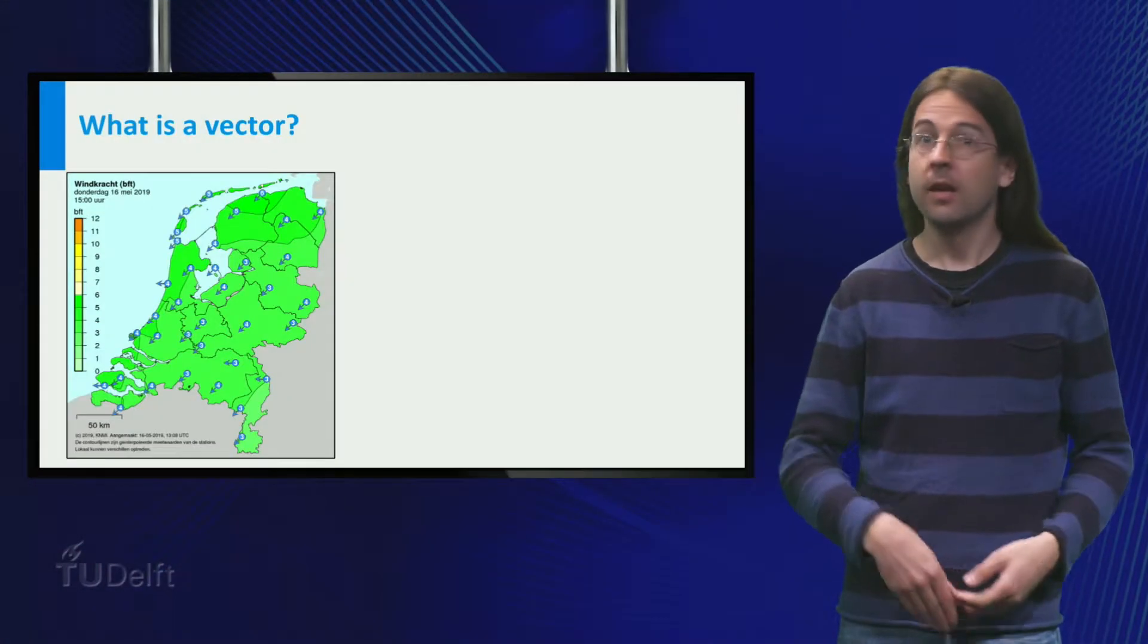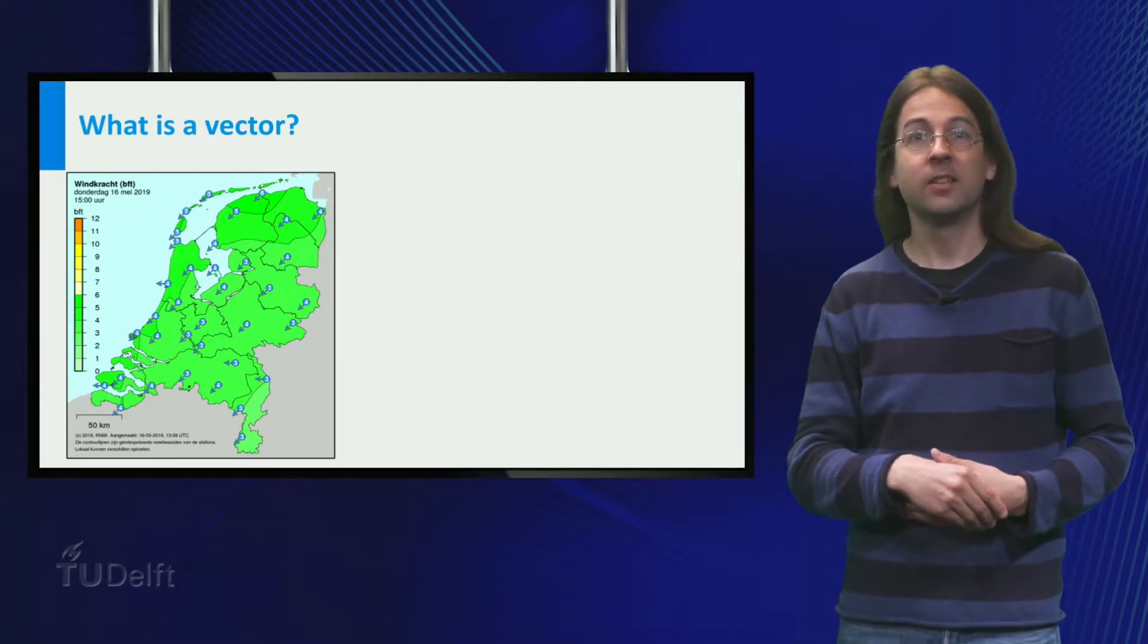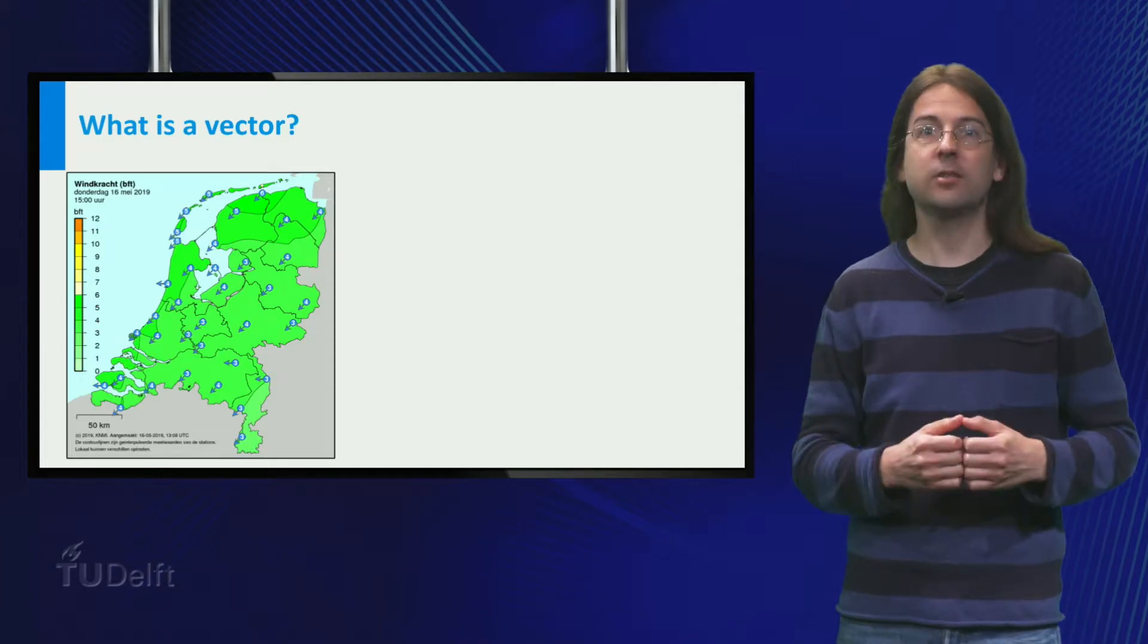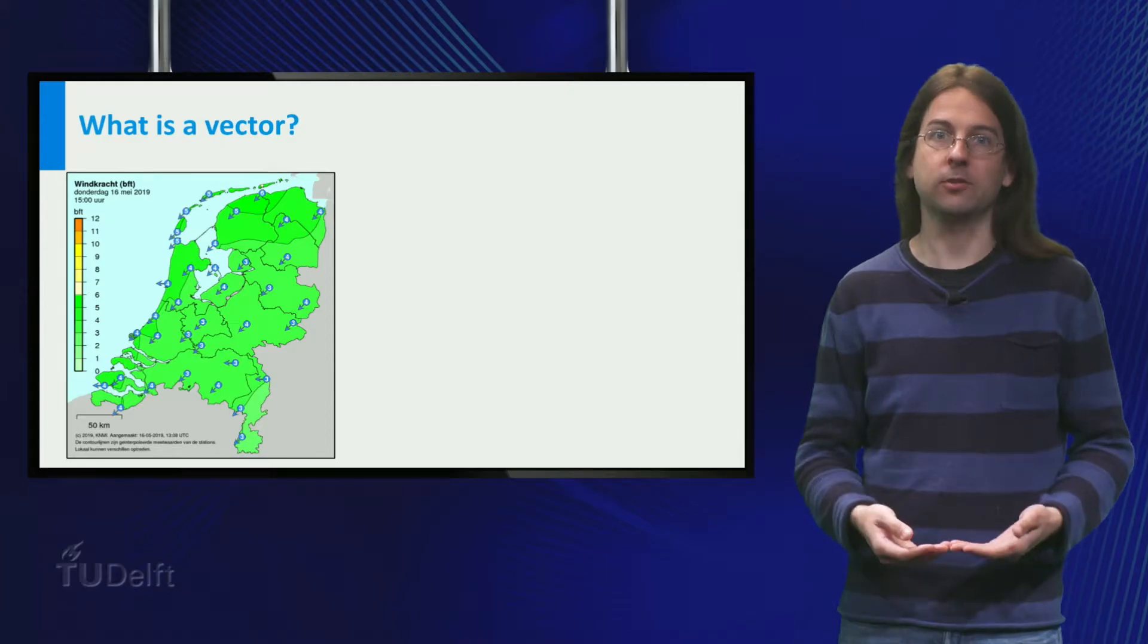Welcome! In the picture you see the wind blowing over the Netherlands. Here in Delft the wind is blowing northeast 4. We can describe the wind using a vector.